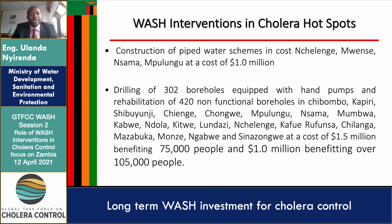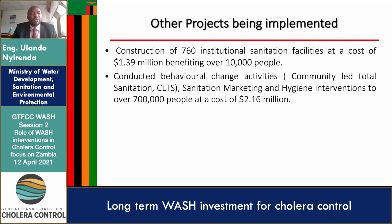We are also drilling 302 boreholes in hotspots, equipped with hand pumps, and have rehabilitated 429 non-functional boreholes in cholera hotspots. We have benefited a total of 75,000 people for water and 105,000 people for sanitation. We have also constructed 760 institutional sanitation facilities in cholera hotspots, and conducted behavioral change, sanitation marketing, and hygiene interventions.